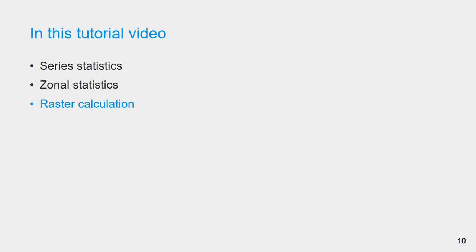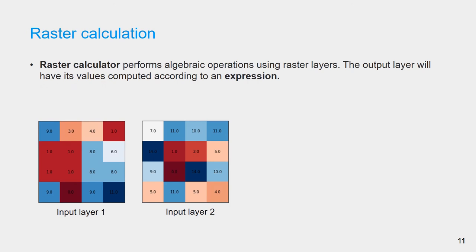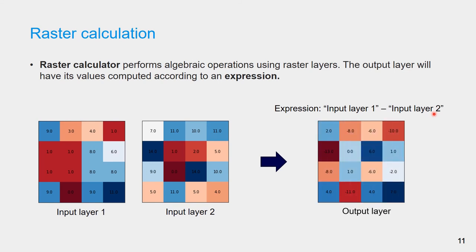Next, I will show you how to do raster calculation in QGIS. The raster calculator tool in QGIS performs algebraic operations using raster layers. The output layer will have its values computed according to an expression. For example, by applying the expression input layer 1 minus input layer 2, we will get this output layer. Here, the first pixel has a value of 2 since its value in input layer 1 is 9 and in input layer 2 is 7.